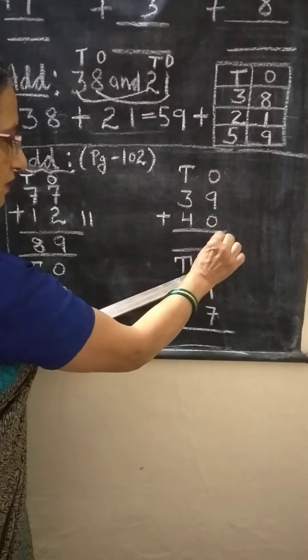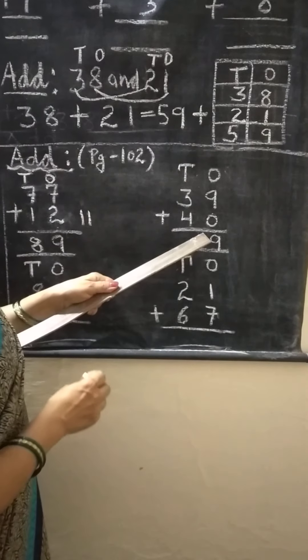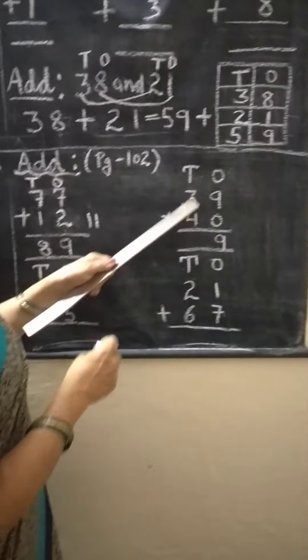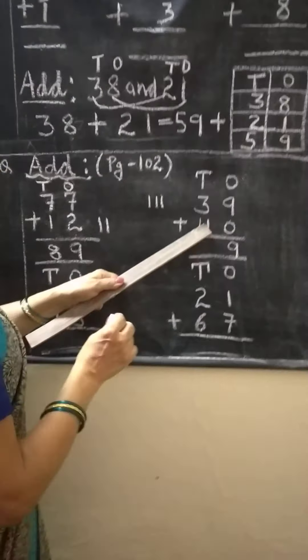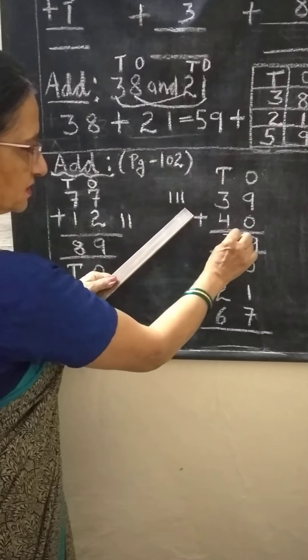Now here 9 plus 0. Zero means nothing, you have to write down the same number. If we add any number with zero, the answer is the same number. Now 3 plus 4, you draw the lines 1, 2, 3. After 4 is 5, 6, 7, the answer is 7.